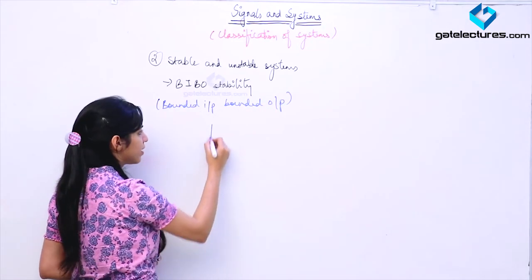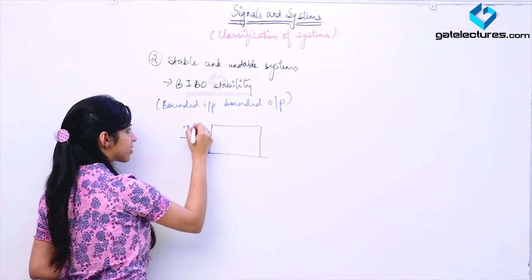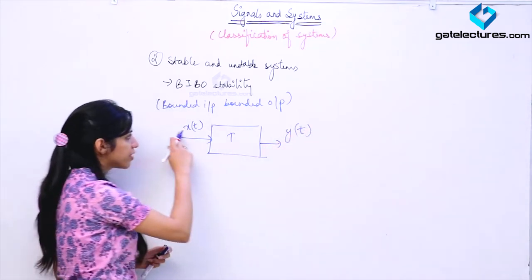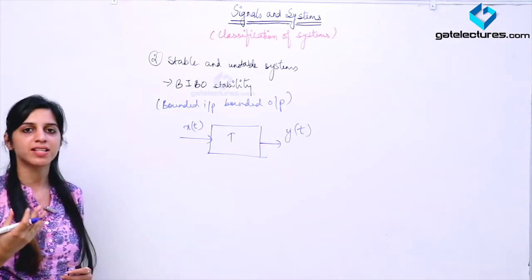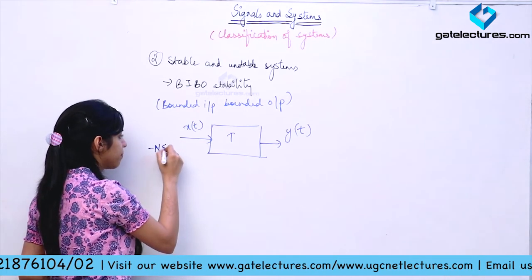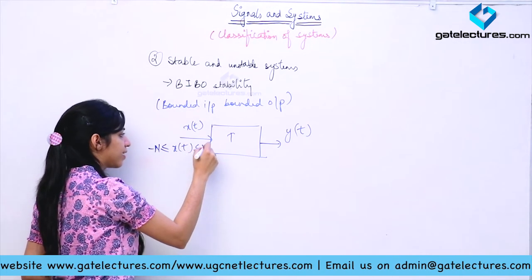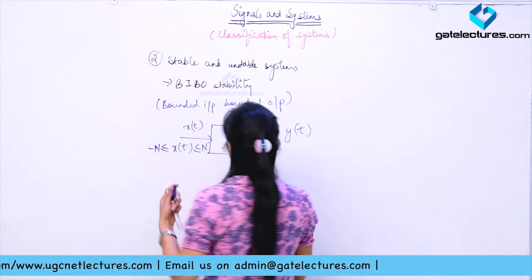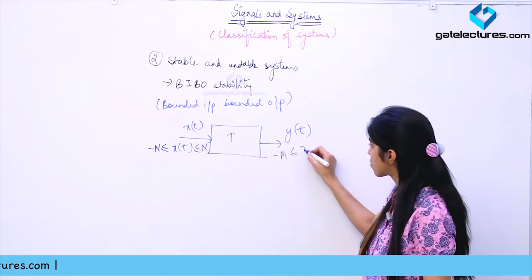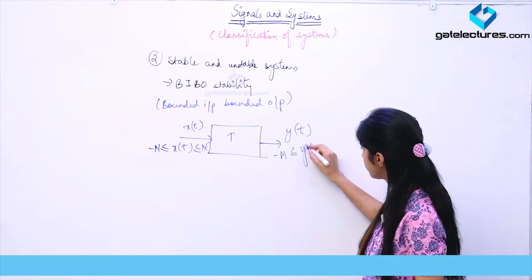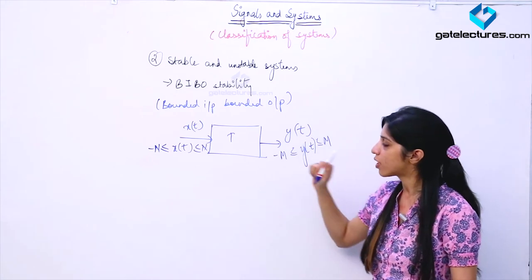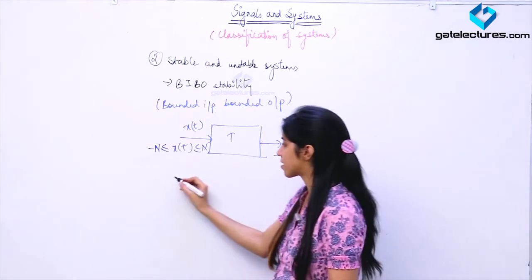If you are providing an input X(T) to a system and this input is bounded — meaning its value is occurring only between some fixed values, suppose between minus N and N — then the output must also be bounded. This is how we are defining Bounded Input, Bounded Output stability. For any bounded input, the output must be bounded.